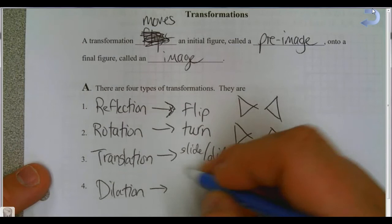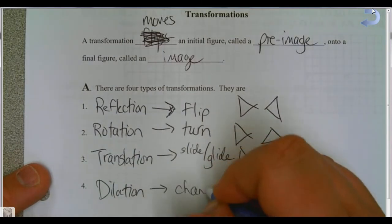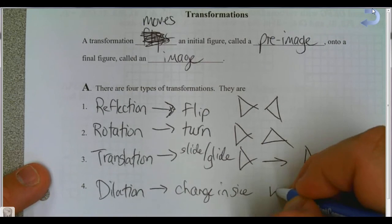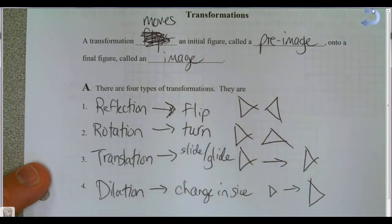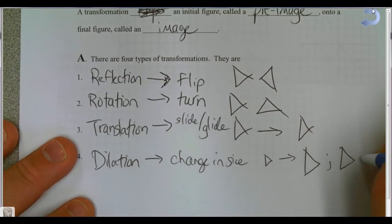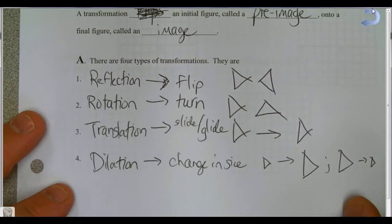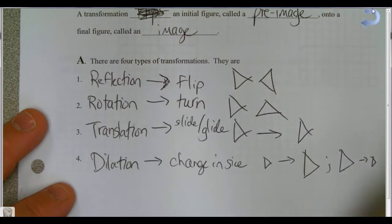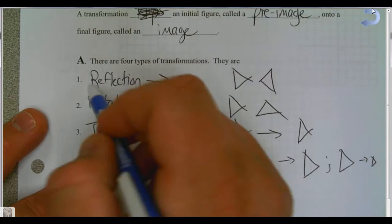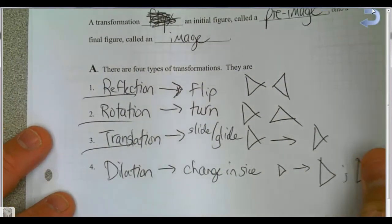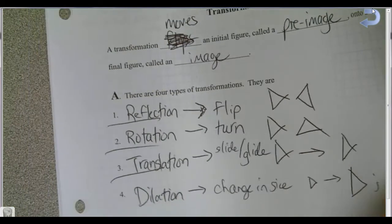And finally we have a dilation, where the shape changes in size — a really little triangle could go to a really big one, or a big one could shrink to a small one. The ones we see the most in geometry are reflection, rotation, and translation, in roughly that order. Let's talk about the different types of reflections and translations we're going to see.